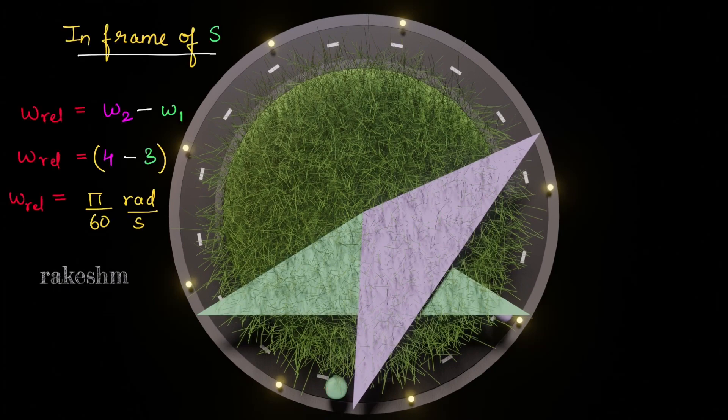We are looking at this in the reference frame moving with same angular velocity as S. So I'm just writing in frame of S: omega relative is omega 2 minus omega 1, or omega relative is 4 revolutions minus 3 revolutions for two minutes.